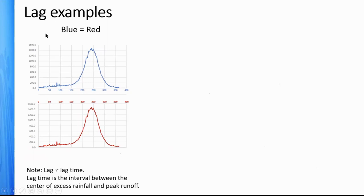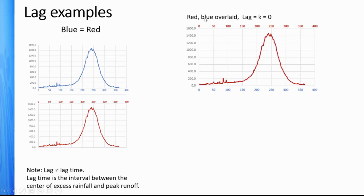Let's look at two hydrographs — one red, one blue, exactly the same. When I talk about lags, this is not the same as lag time in watershed analysis — that's the time interval between center of excess rainfall and peak runoff. I am talking about lag, which is a shifting of the data compared to itself. If the red and blue are perfectly overlaid, there is no lag, so K equals zero. In that case, the correlation coefficient will always be one, because any data set compared to itself has a correlation coefficient of one.